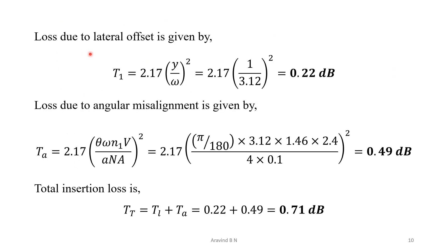Now, the loss due to lateral offset is: Tl = 2.17 × (y/ω)². With y = 1 micrometer and ω = 3.12 micrometers, substituting gives a lateral offset loss of 0.22 dB.